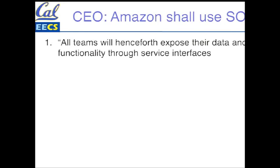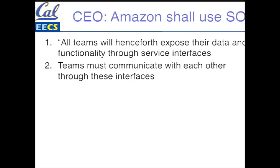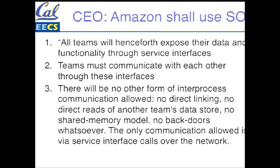All teams will henceforth expose their data and functionality through service interfaces. This is from the CEO. Two: teams must communicate with each other through these interfaces — you're going to make them available and everybody's going to have to use them. There are no other ways to communicate, no other kind of inter-process communication, no direct linking, you can't do reads of somebody else's data, there's no shared memory, everything's independent.